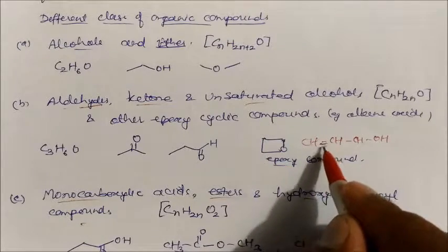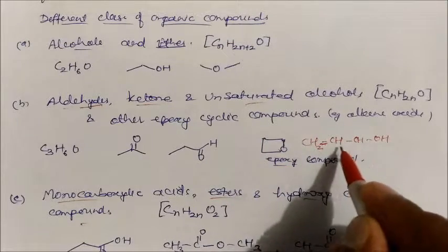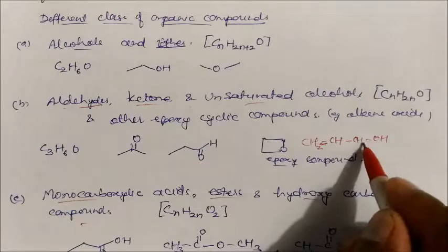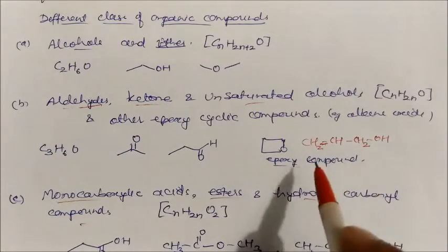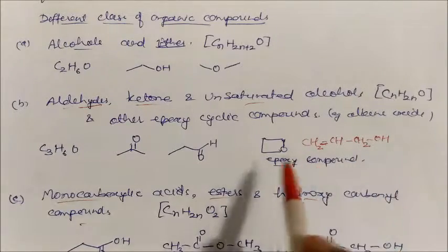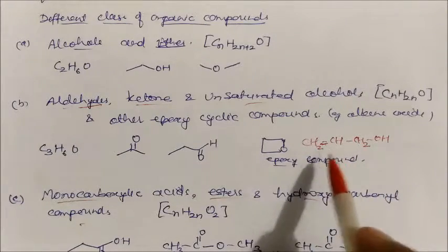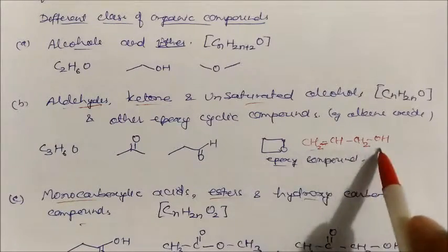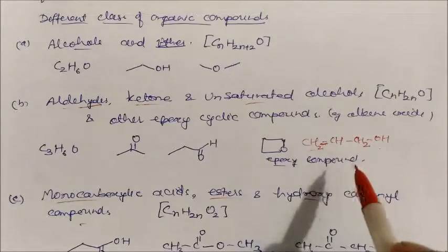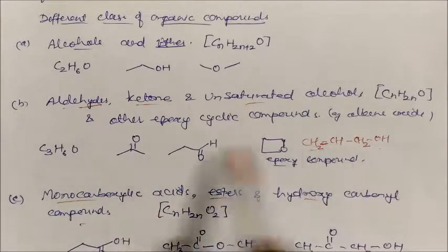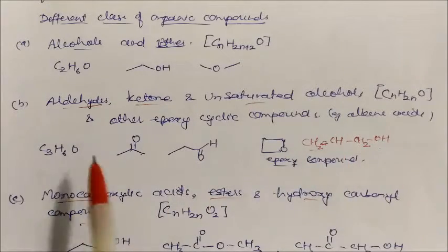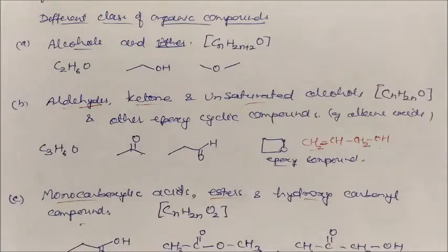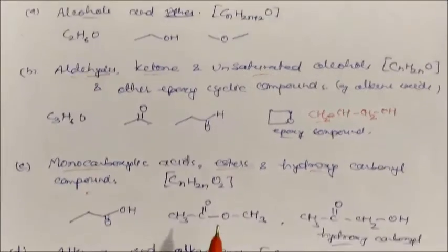An unsaturated alcohol has a double bond and an OH group. For example, with C3H6O we can have aldehyde, ketone, epoxy compounds, and unsaturated alcohol — all four groups are functional isomers of each other.